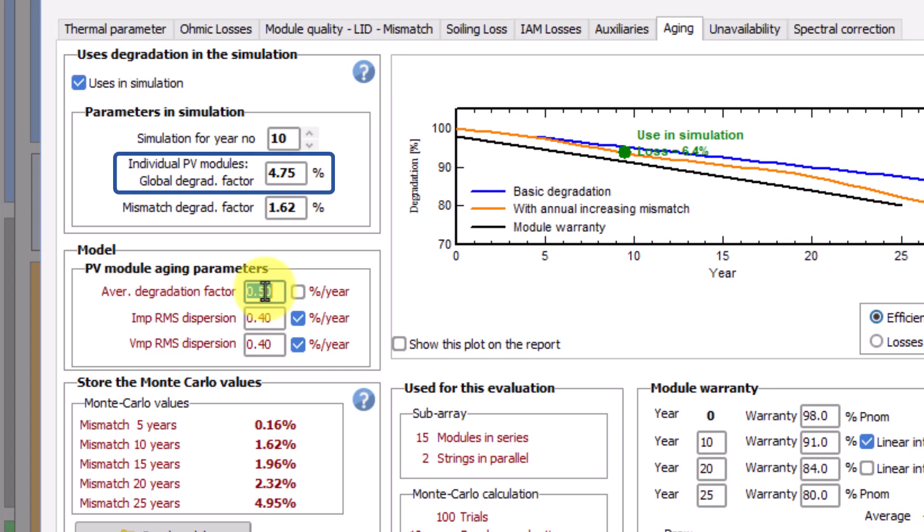Note that the global degradation factor for an individual PV module changes when the value of the average degradation factor is modified. For the first year of simulation, only half of the average degradation factor is applied to the global one. The average degradation factor is hence always evaluated at mid-year.